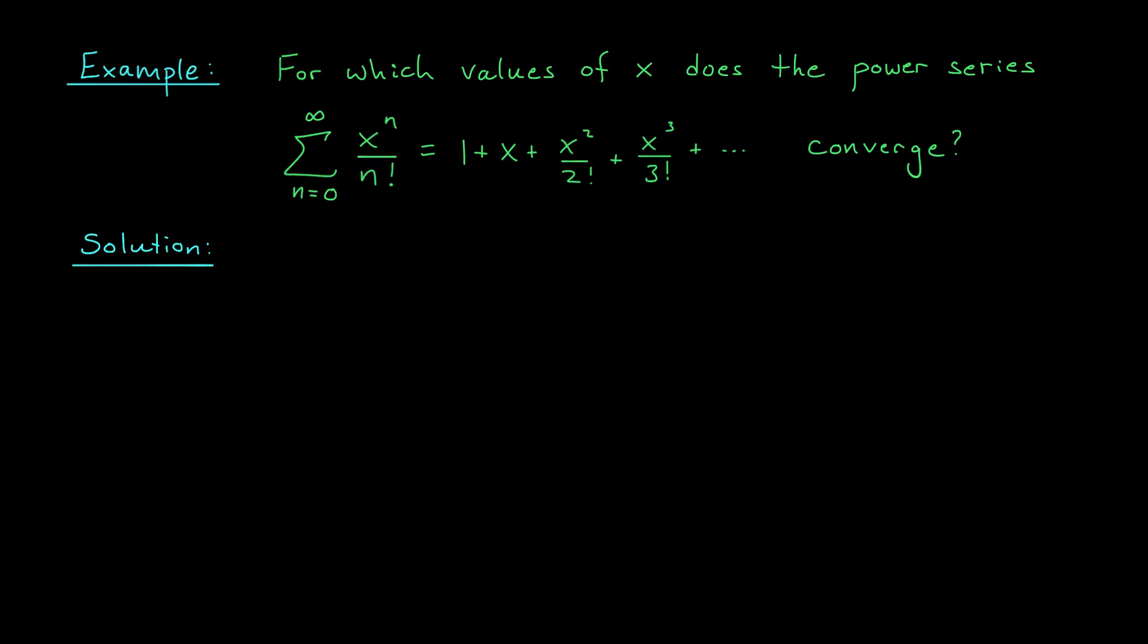To see how we might go about answering this question, consider the following example. For which values of x does this power series, the sum from 0 to infinity of x to the n over n factorial, converge? Here we're actually being asked quite a bit. We're being asked to test the convergence of infinitely many series. Will this series converge if I plug in x equals 2? What about x equals 3? Or x equals 5? Or x equals minus 200 pi? Well, fortunately, we can test the convergence of all of these series at once using the ratio test. We'll just treat x like an arbitrary constant and apply the ratio test to this series. So let's write this down. We'll apply the ratio test.